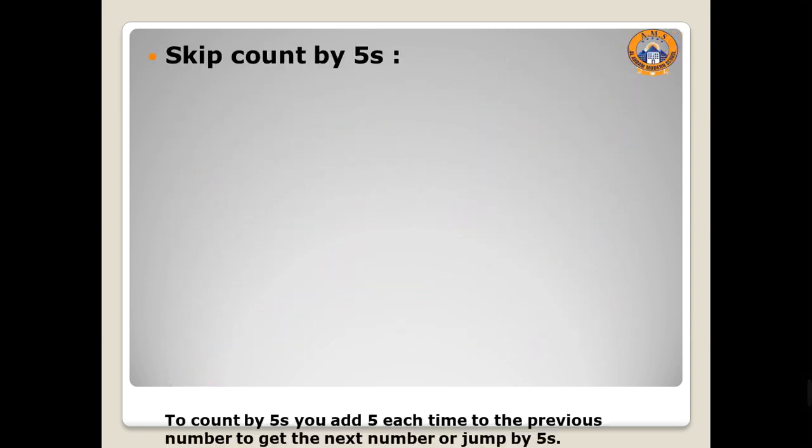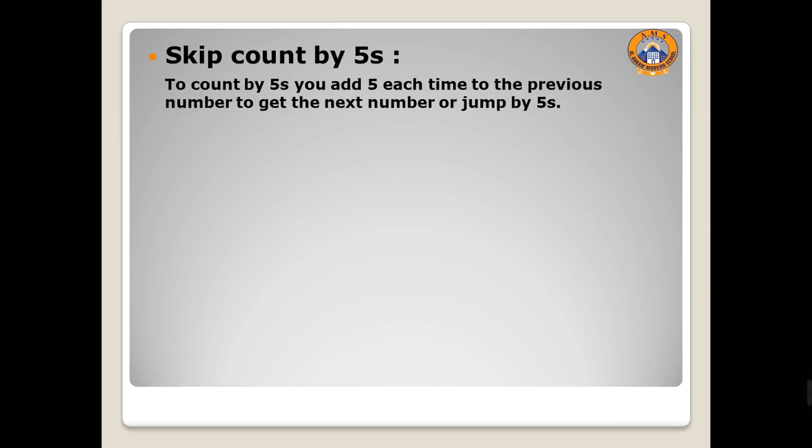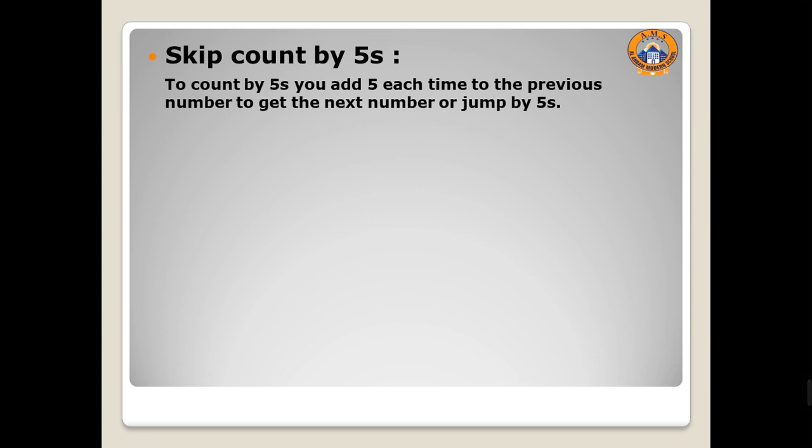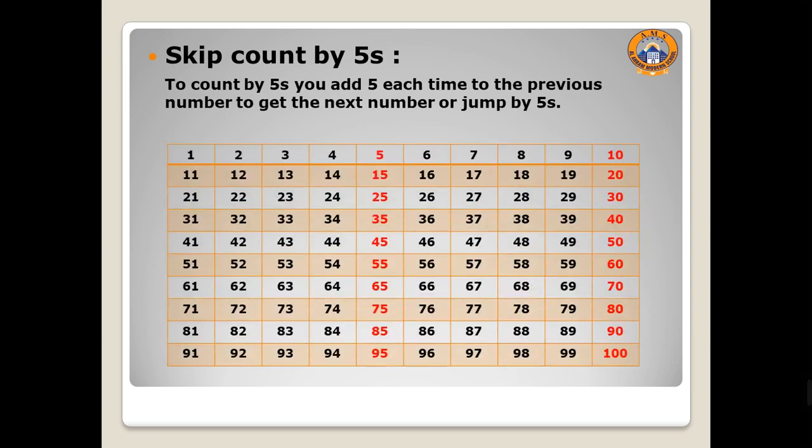Skip count by 5s. To count by 5s, you add 5 each time to the previous number to get the next number, or count by 5s. Look on 100 chart. When you start with number 5 and add 5, you will get, yes excellent, 10. You will get 10, then 15, then 20, then 25, then 30, then 35. Count 5 each time, okay?